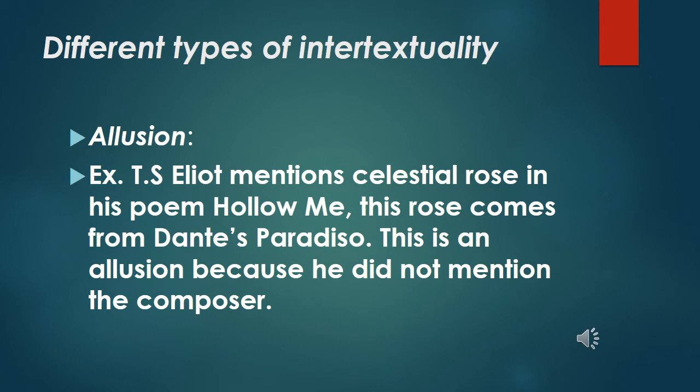There are different types of intertextuality, all of which refer to texts in different ways to produce and shape meaning. The first type is Allusion — a subtle or indirect reference to another historical period or religious belief. For example, T.S. Eliot mentions a celestial rose in his poem. This rose comes from Dante's Paradiso. This is an allusion because he did not directly mention the original composer.